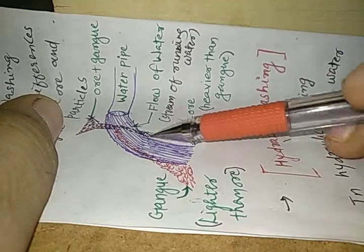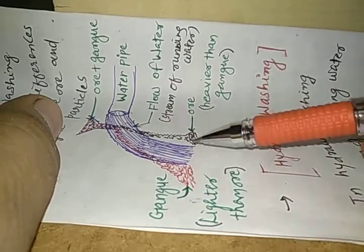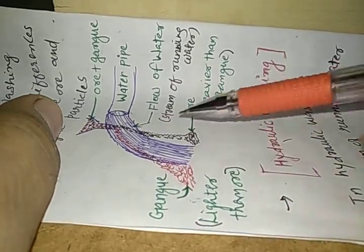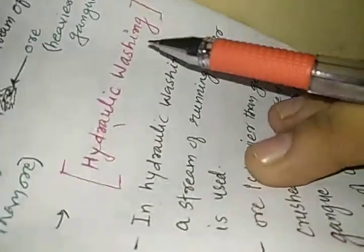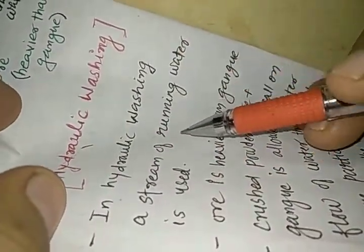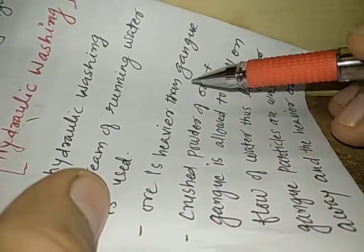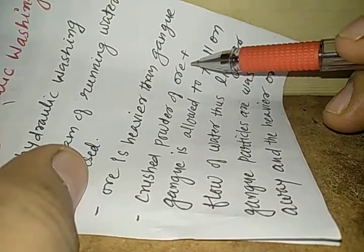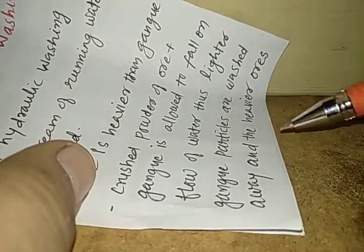The heavier ore falls down and is collected, separated from the gangue particles. The gangue particles, being lighter than the ore, are washed away with the water. In hydraulic washing, a stream of running water is used. Crushed powder of ore and gangue is allowed to fall on the flow of water. Lighter gangue particles are washed away and the heavier ore particles are left behind.